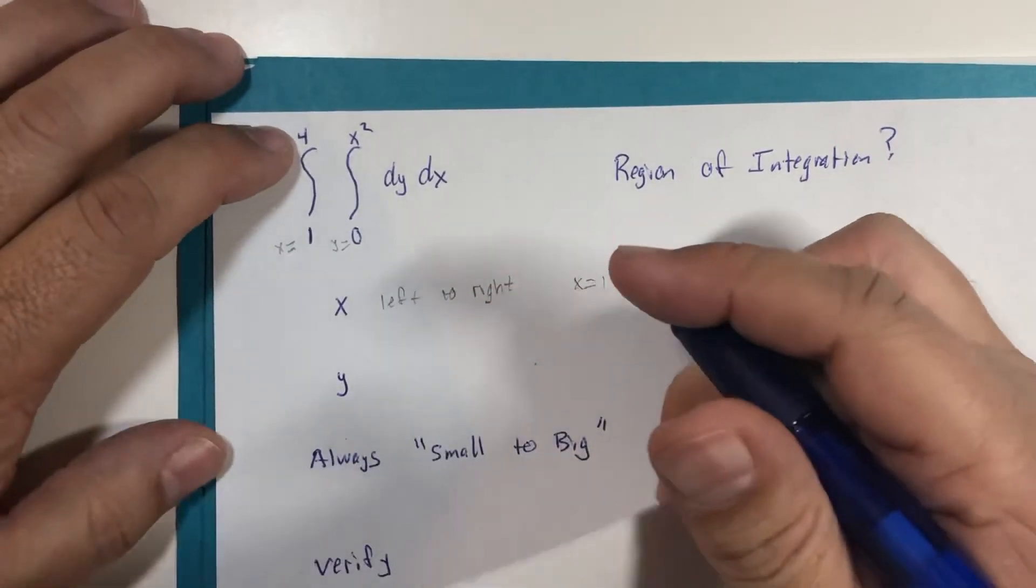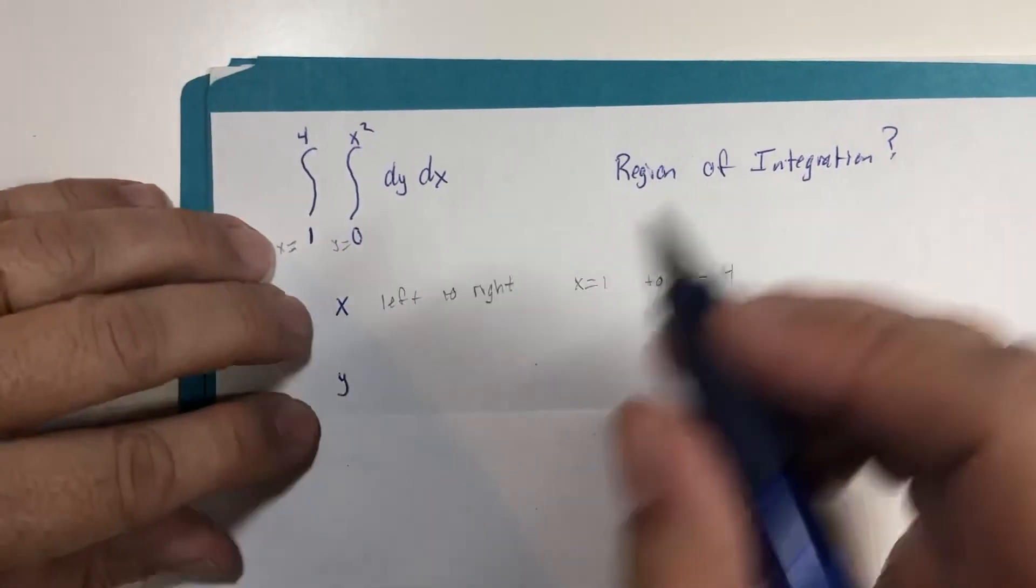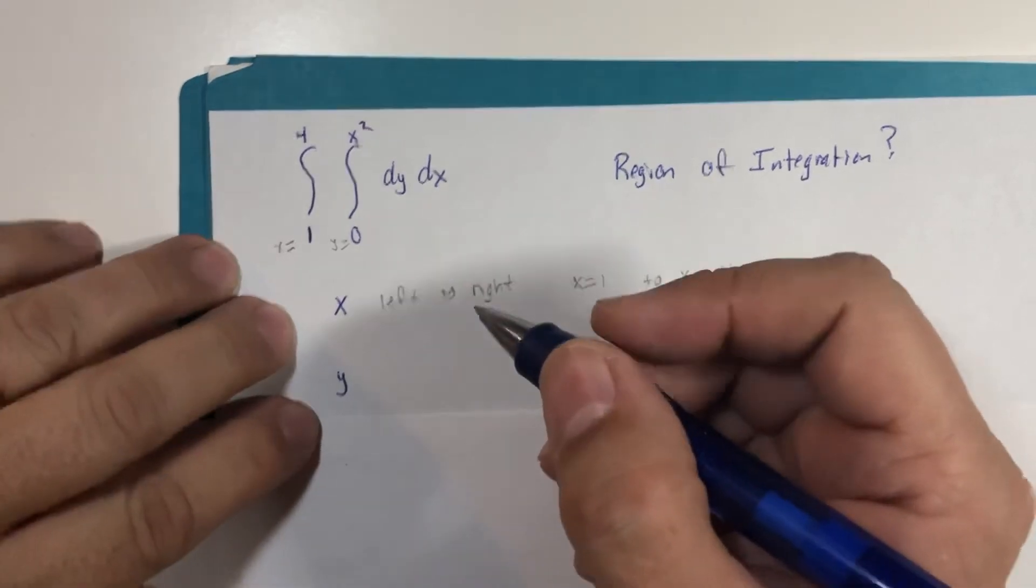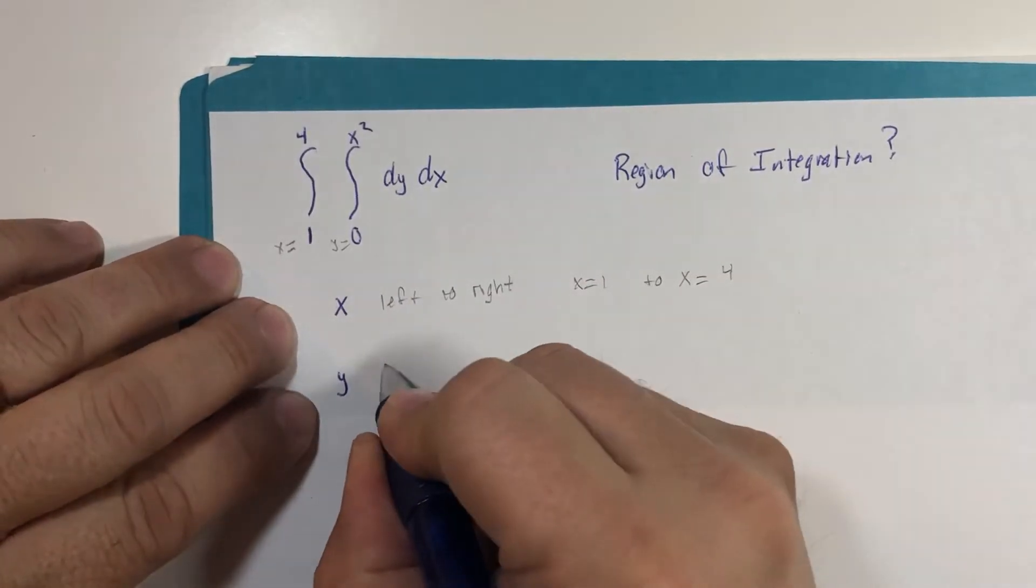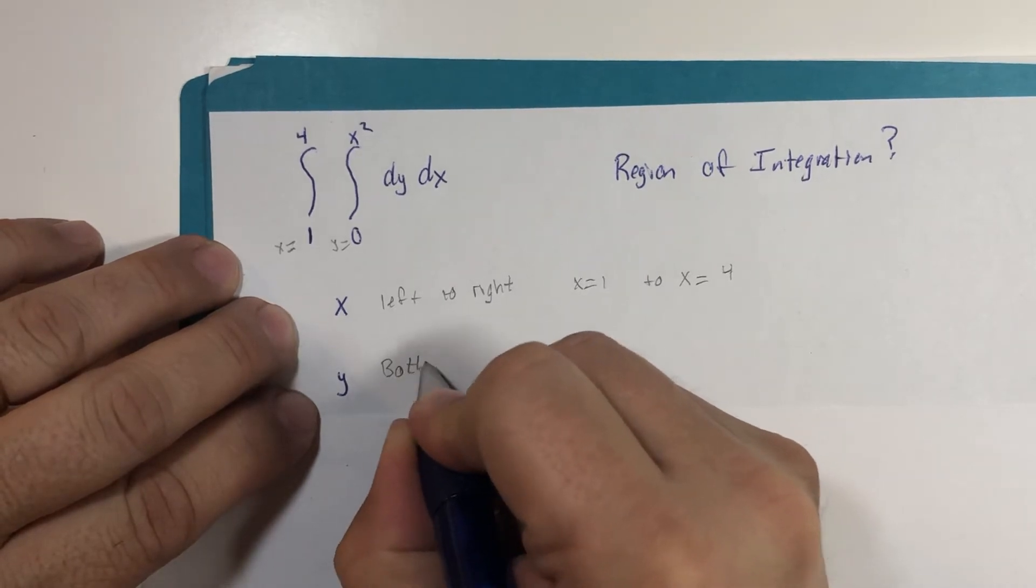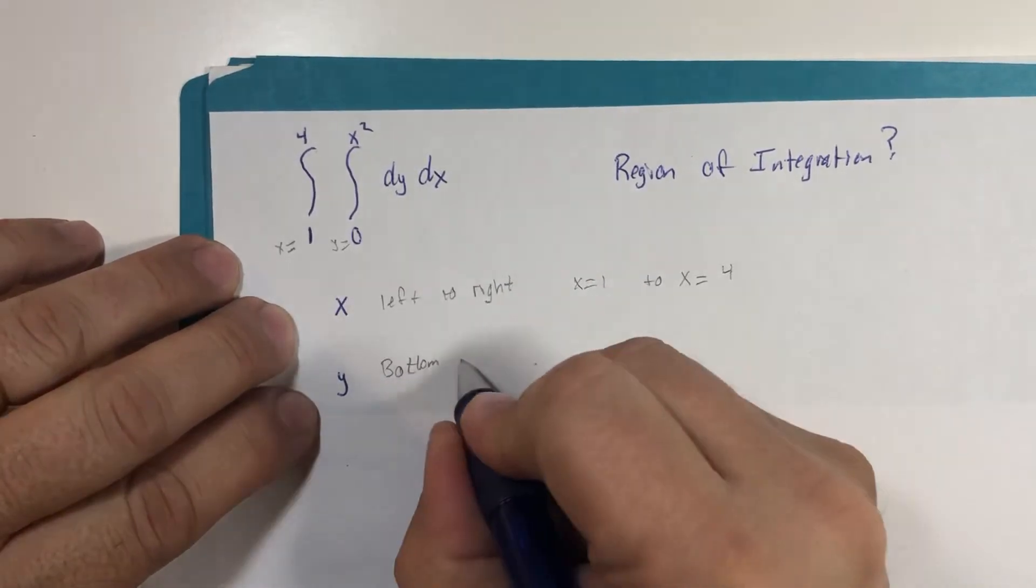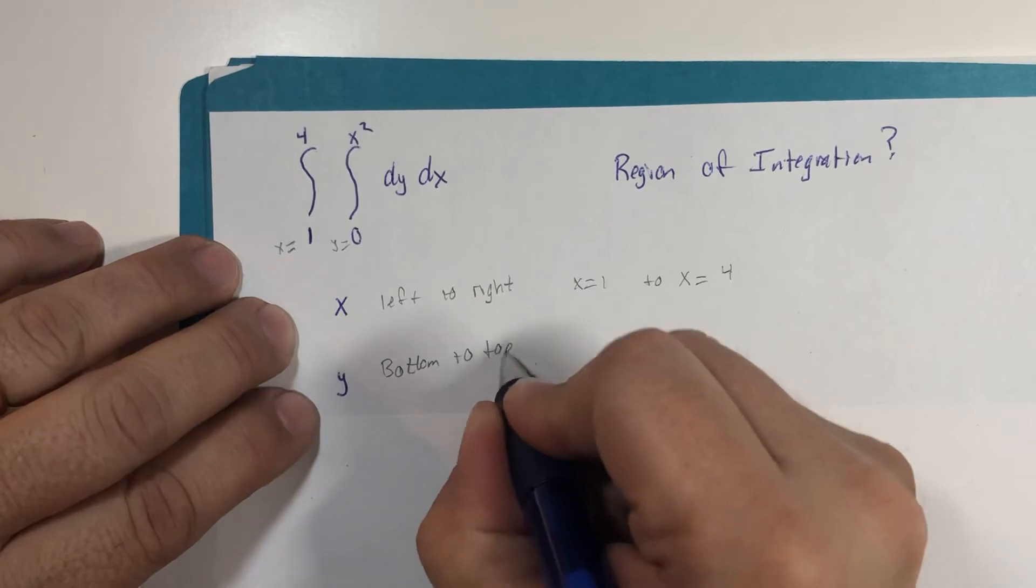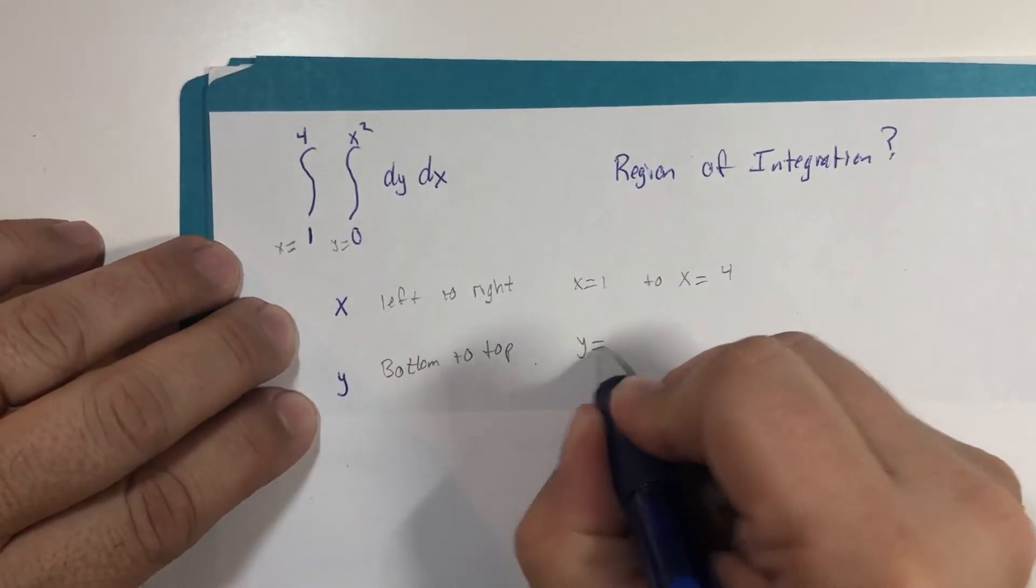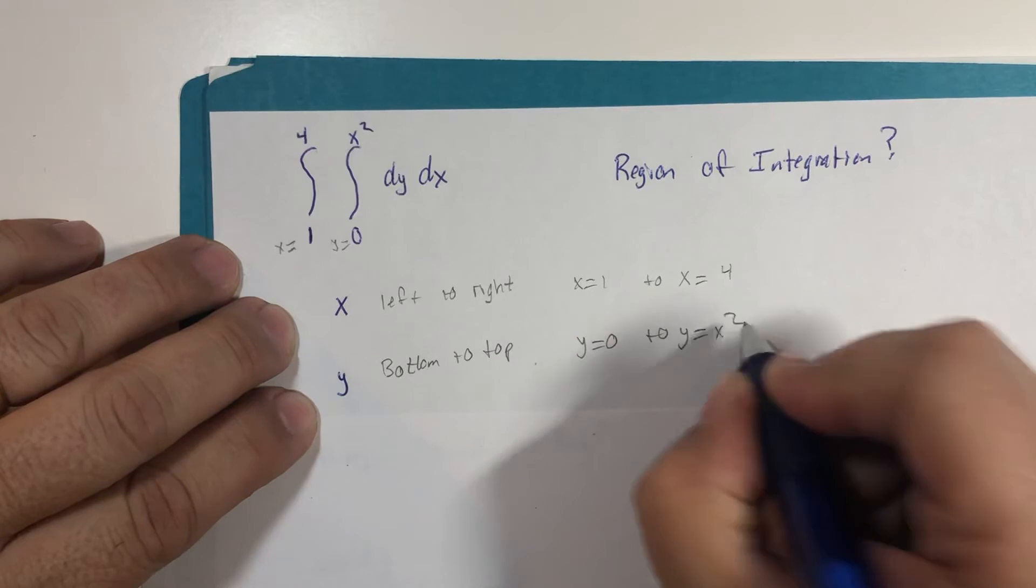And then y, well the lower boundary should be the bottom and the upper boundary should be the top, y equals zero to y equals x squared.